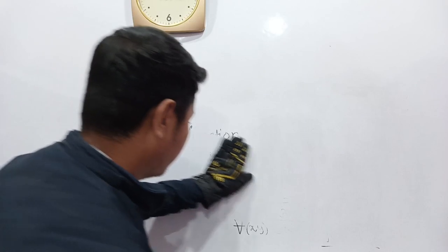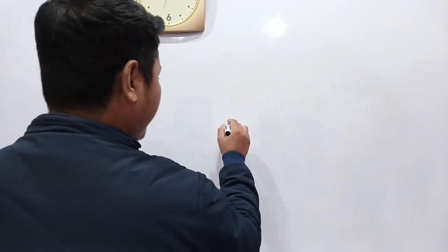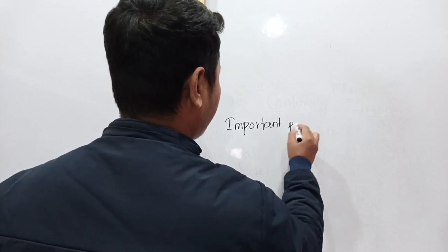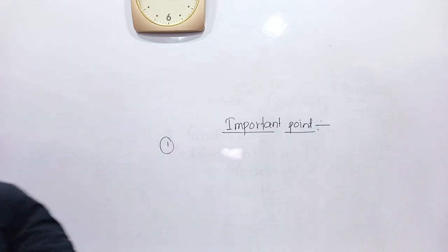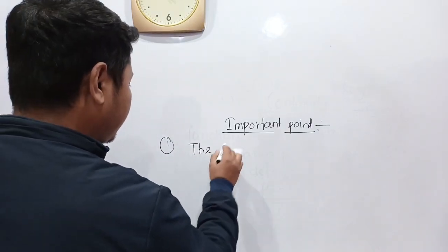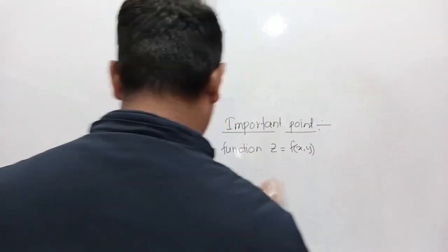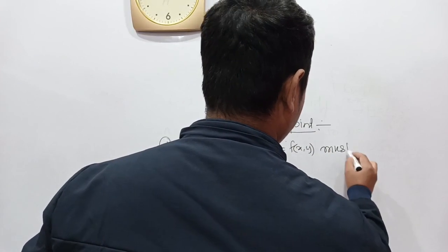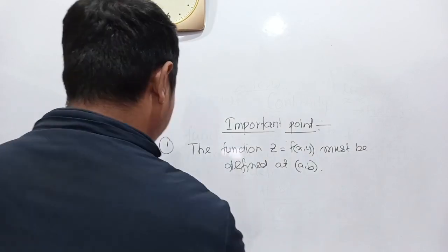These are the important points you must note regarding continuity of a function of two variables. Number one: for continuity of the function z = f(x,y), the function must be defined at every point — that means the function must be well-defined at the point.